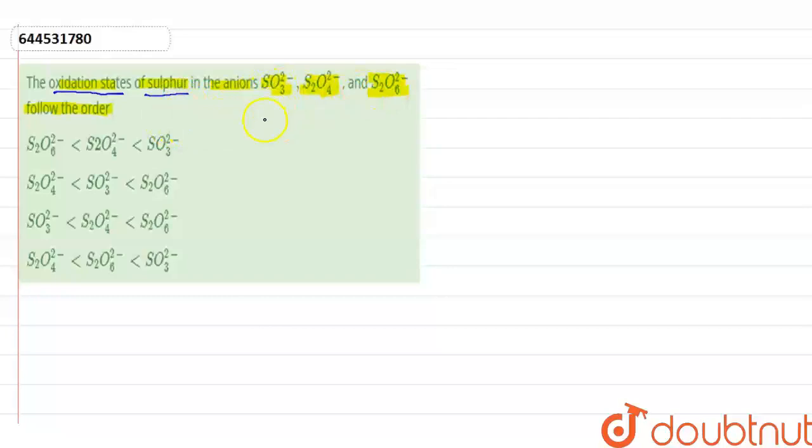Let's suppose the oxidation state on sulfur is x. Oxidation state calculation for SO₃²⁻ is: x + 3(−2) = −2. The oxidation state of oxygen is −2. When we calculate, x is equal to +4.